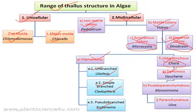Then we have siphonaceous forms, example is Botrydium. Siphonaceous forms have a single cell structure but with multinucleate conditions. When they start forming their reproductive structures, they form septa. The basic structure is called siphonaceous or coenocytic. Then we have pseudo-parenchymatous, example is Monostroma, and parenchymatous, example is Ulva.